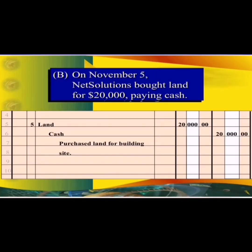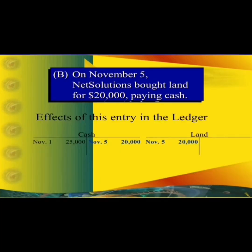The next transaction is on the 5th of November. Land is debited with a specific amount and cash is credited with that same amount. Both debit and credit amounts must be equal. The effect of this transaction in the ledger: cash is credited with 20,000 and simultaneously 20,000 is debited in the land T-account.